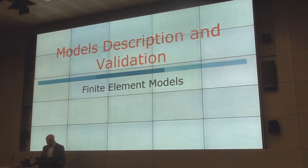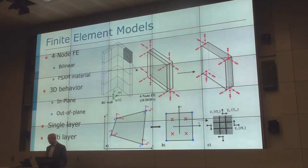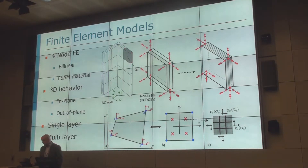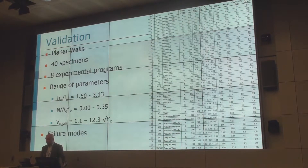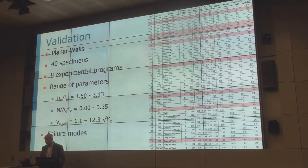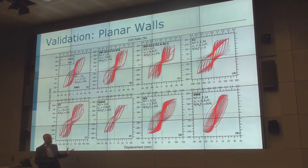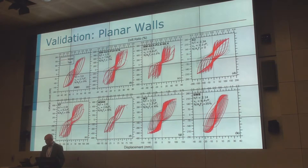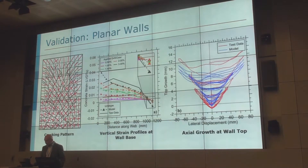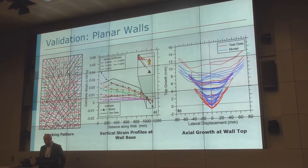Then we took one step forward and extended this to a finite element formulation. We use the same two-dimensional material model, just put into a relatively standard four-node finite element formulation. We validated that against a lot of tests, and here you can see how it performs against maybe eight specimens with various aspect ratios, axial loads, and shear stresses. It's doing an okay job in terms of strength and stiffness, and looking at local responses — axial growth, cracking patterns, strain profiles along the base — it's also doing pretty well.